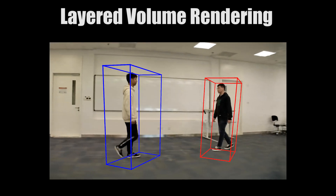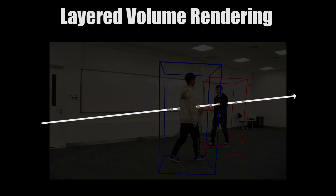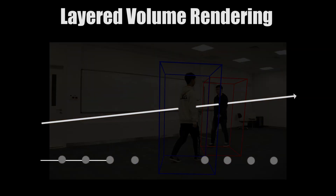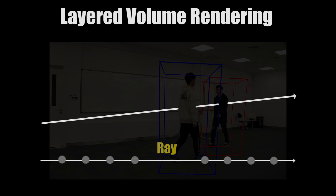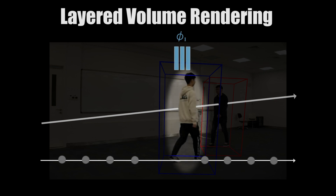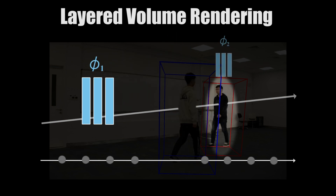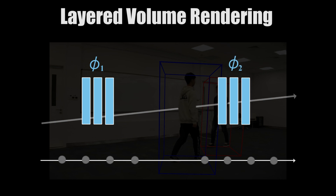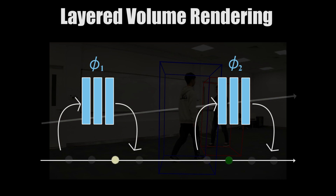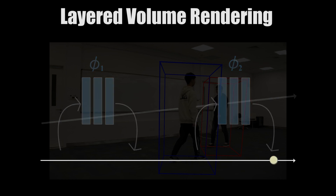To predict the rendered image, we trace a ray from camera position to each pixel. The ray may pass through multiple entity bounding boxes. We sample points along the ray for each entity, then feed the sample points into the corresponding ST-NeRF, obtaining the densities and colors of the sample points. Using a volume rendering technique, we can predict the pixel color for the scene.